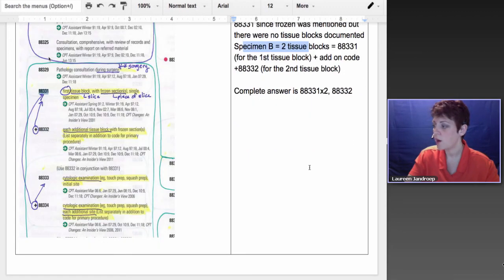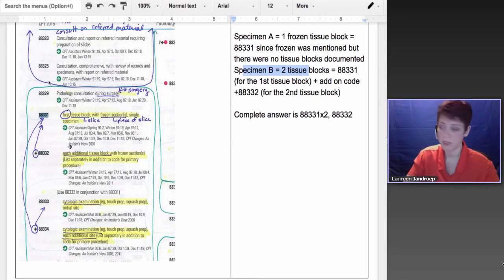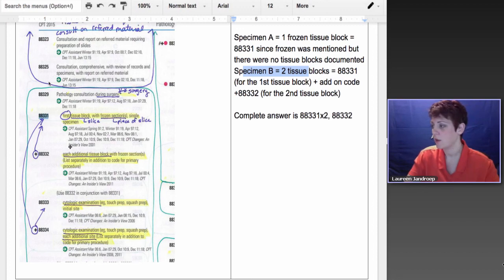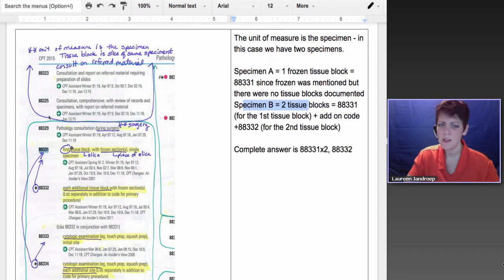So hopefully that will help, gives you a little sample of bubbling and highlighting. I use a lot of food analogies when I'm teaching coding, so I would tell people, think of the specimen as a little meatloaf and then the frozen sections are the slices. It's kind of gross, but if it helps you remember, then go with it.